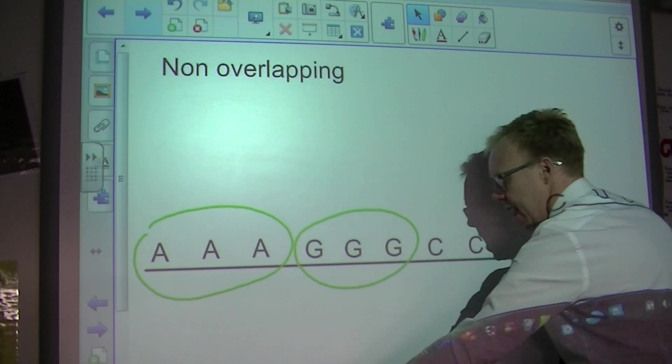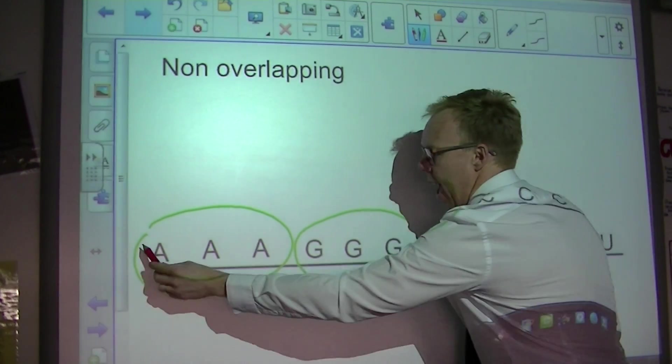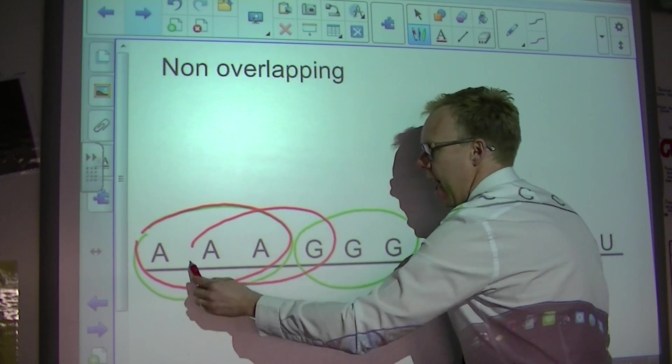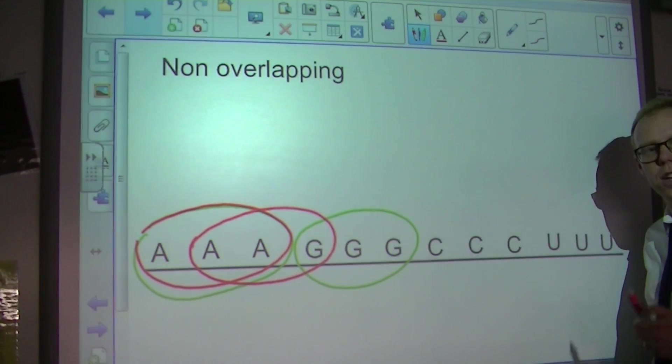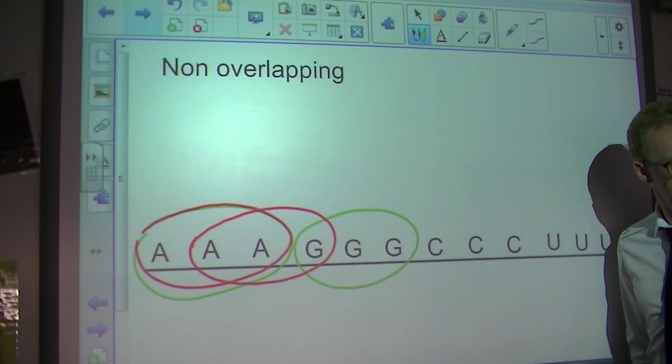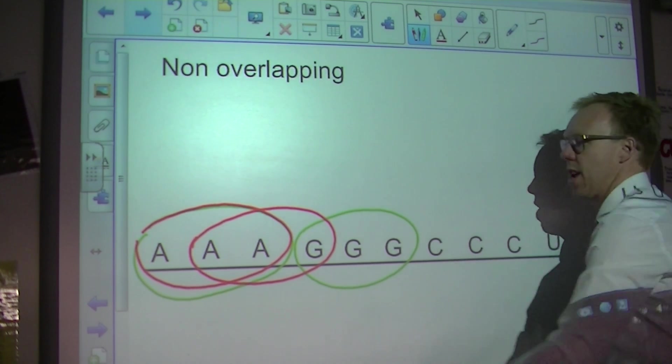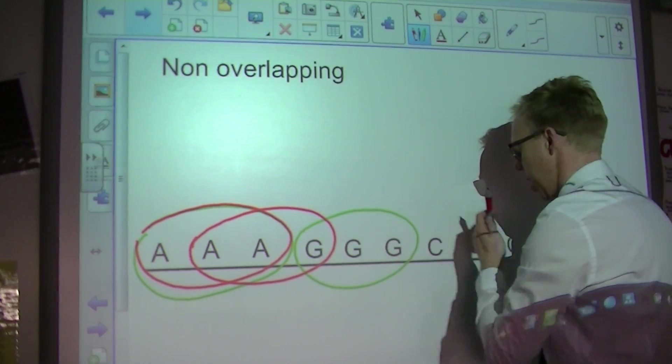It reads them in triplets instead of reading A, A, A and then reading A, A, G. That's what it would be if it was overlapping. Alright, so the genetic code first point is non-overlapping. It reads it in separate triplet codons.